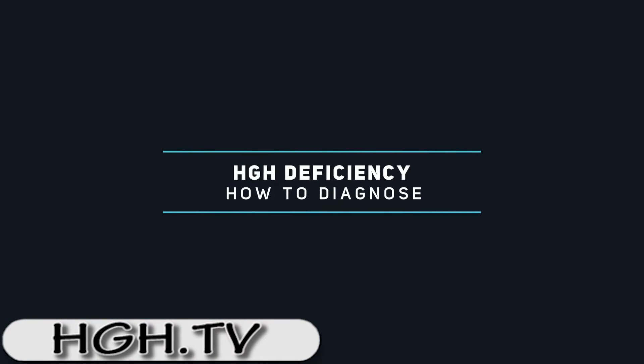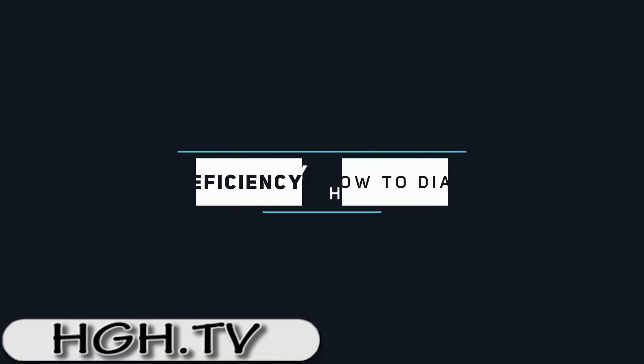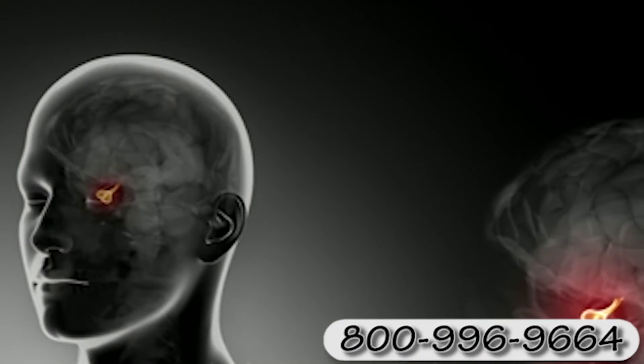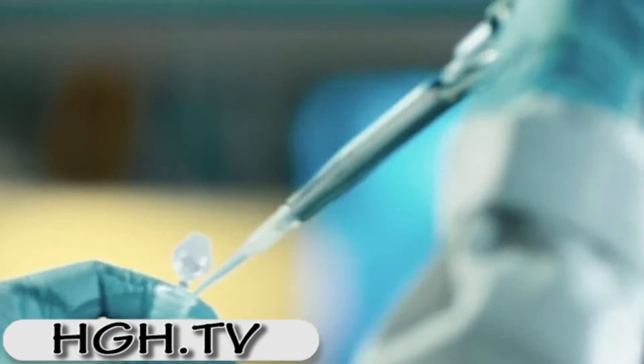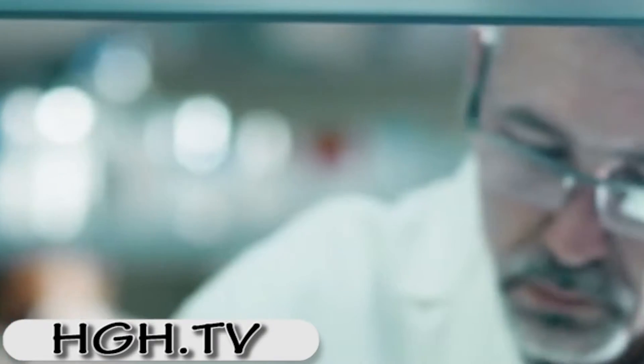How is HGH deficiency diagnosed? There are two important means by which physicians diagnose human growth hormone deficiency. One way to diagnose low growth hormone levels is through pituitary stimulation. This form of testing is used to diagnose HGH deficiency which is caused by an insufficiency of the pituitary. Most people have healthy pituitary glands, however.